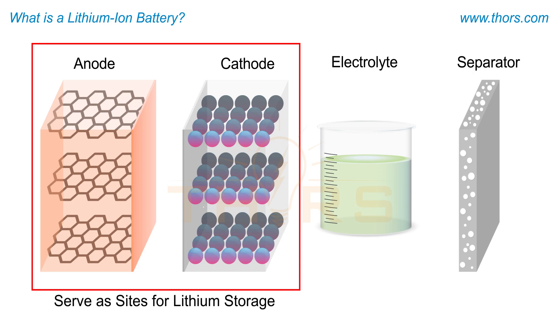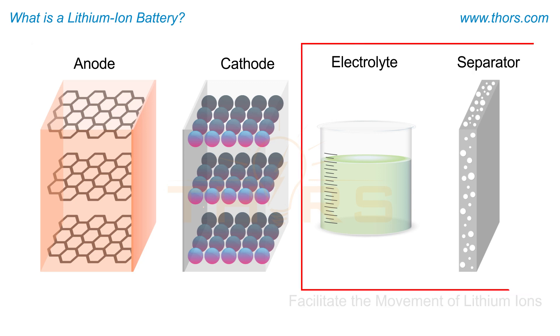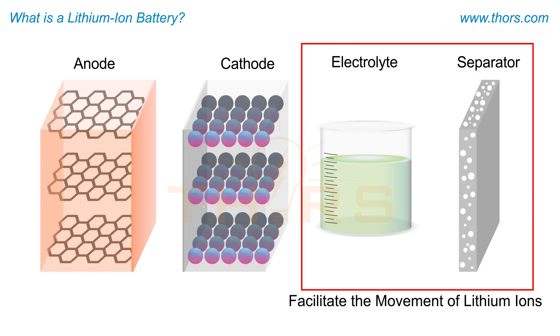The anode and cathode serve as sites for lithium storage, whereas the electrolyte and separator facilitate the movement of lithium ions.